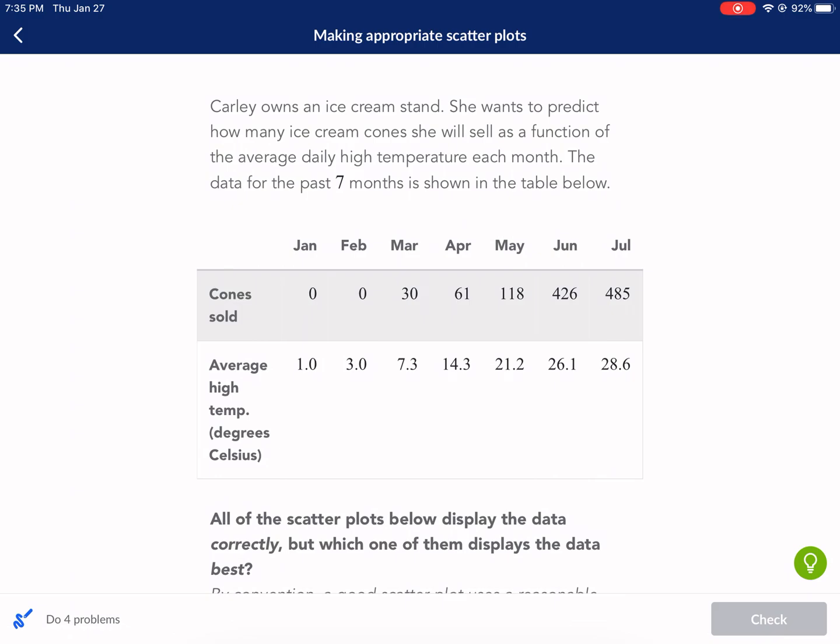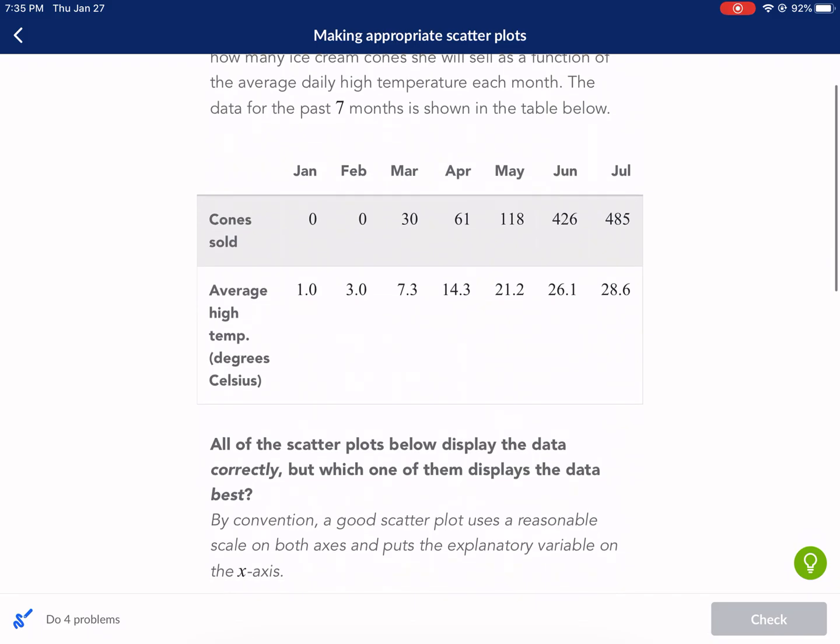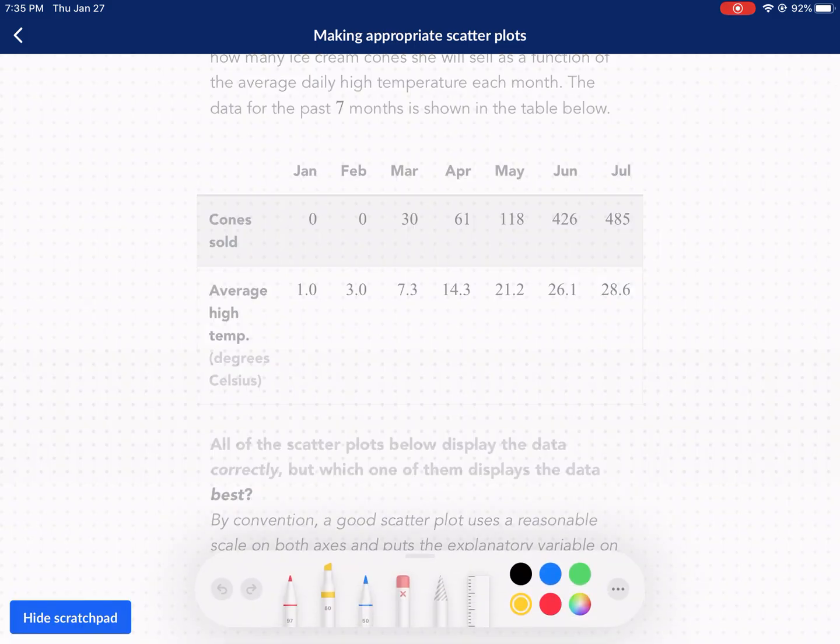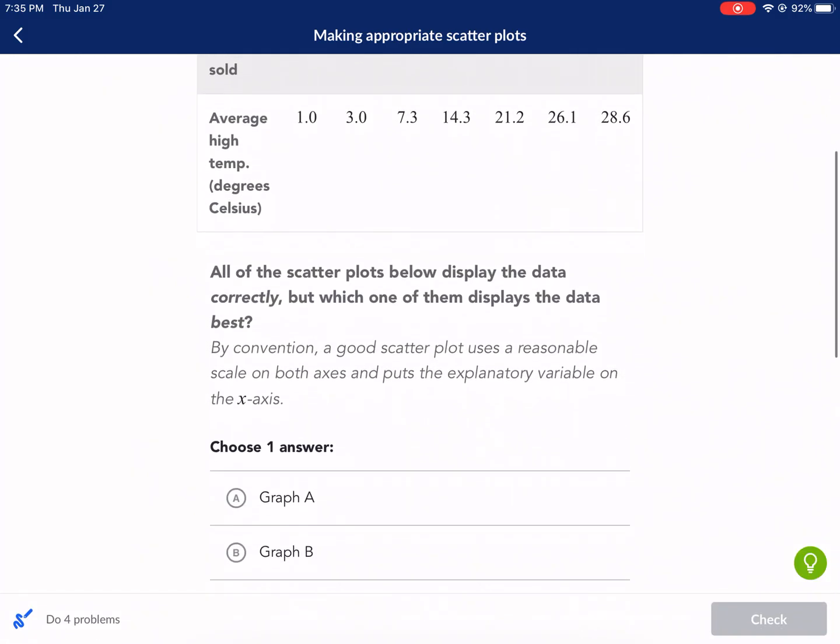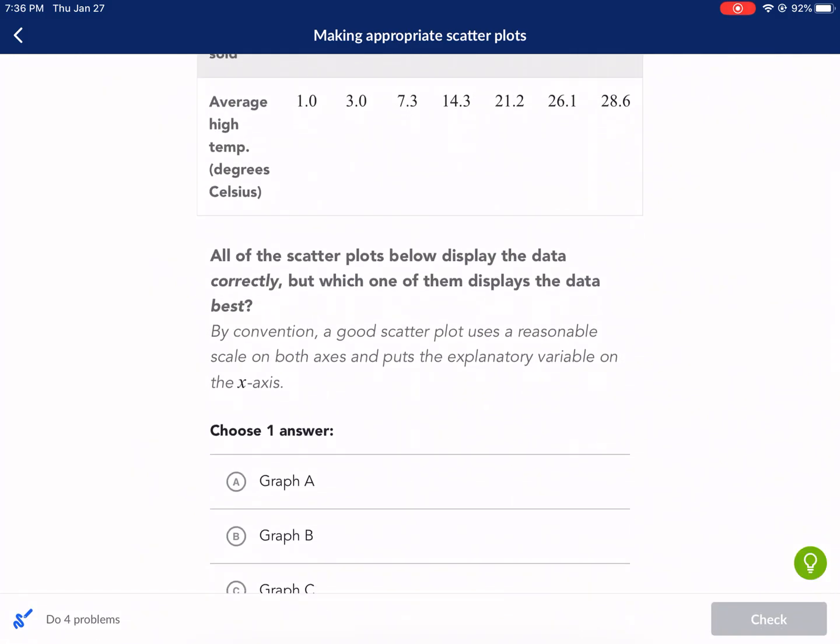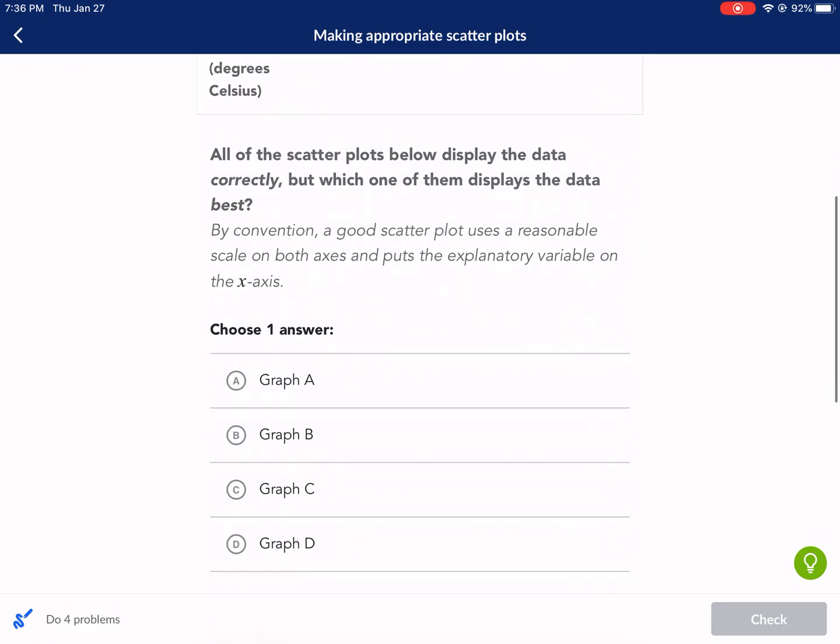I'm going to skip some of the details. Basically, there's an ice cream stand and you can see that we have cones sold and the average temperature. Now for the past seven months, all the scatter plots below display the data correctly, but which one of them displays the data best? Now it says here, this is a big hint actually.